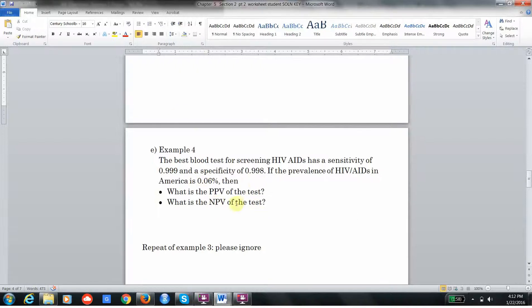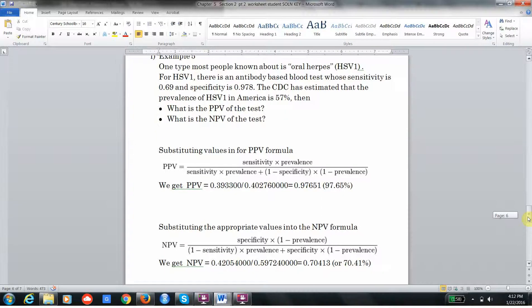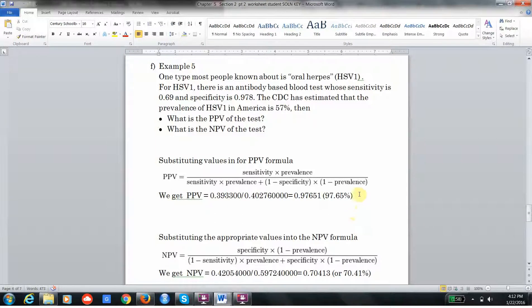The oral herpes we did in class—you can check your numbers but these are the values we got. Notice here the key thing: the PPV is very much higher. Why? Notice the test is actually worse—the sensitivity and specificity are worse than AIDS—but the prevalence increased. It went from 0.06% to 57%, a huge difference. Notice how that changes the PPV. If you take a test for oral herpes and it comes back positive, you can be roughly 98% sure you actually have it. The interpretation of this test result is very different than AIDS.